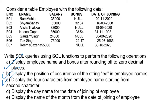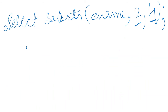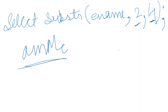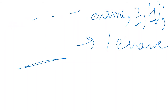For example, if we see the first entry 'Ram Mehta', starting from the second character gives us 'am', and then we need 4 characters total, so the result would be 'amme'. This is how the SUBSTRING formula works for this particular question.